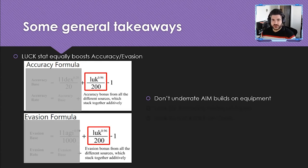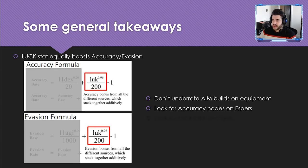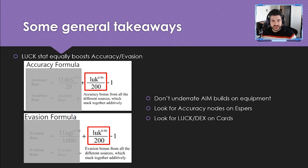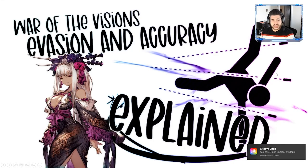Don't underestimate aim builds on equipment — those big percentage boosts help significantly. Look for accuracy nodes on espers: a +3 and +4 node means 7% extra accuracy, which is meaningful. Also look for luck and dexterity on vision cards. Swordsman's Refinement has around 26 luck — divide by 2.5 and that's 10 extra evasion points. The Test Subjects card has 70 dexterity — divide by 5 and that's 14 extra accuracy points. Don't underrate those external sources.